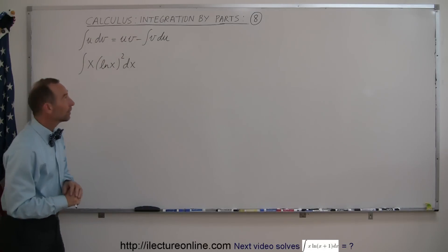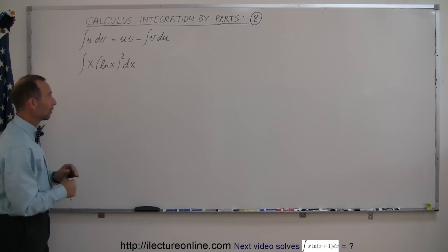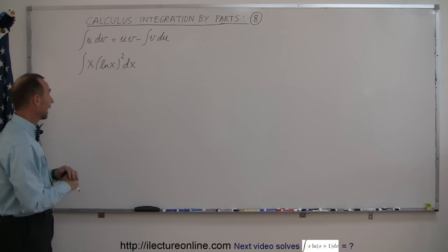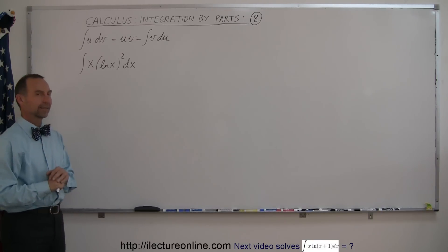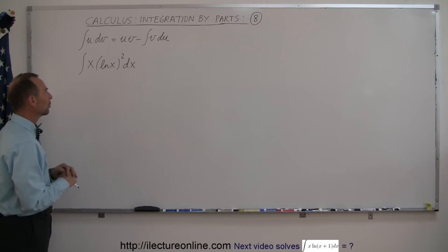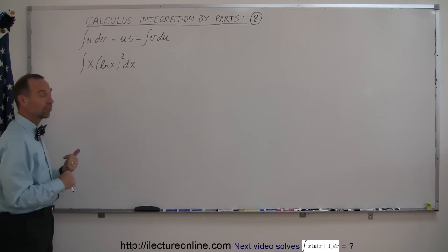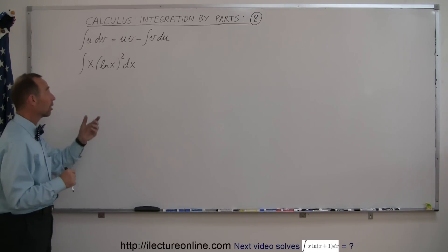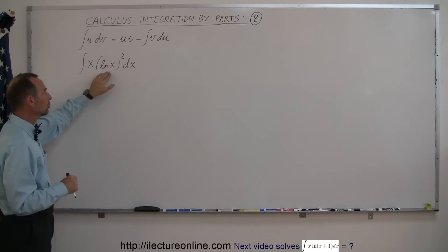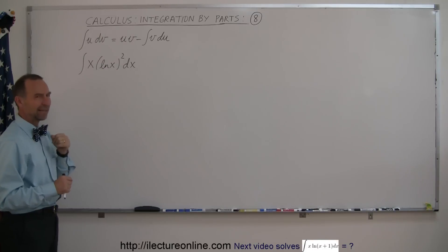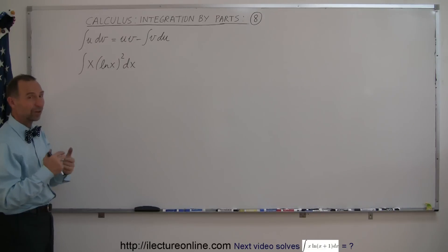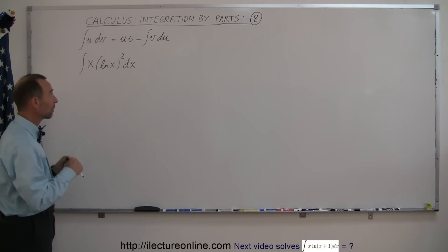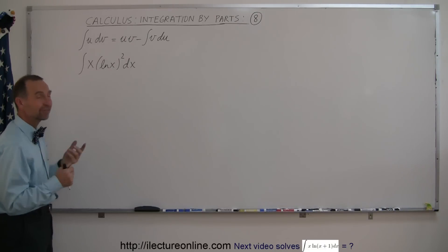Here's example number 8 on how to use integration by parts to integrate x times the natural log of x squared dx. Since we don't know how to integrate the natural log of x, it's not a good idea to call this portion dv — you'd have to integrate it — so we're going to call this portion u. But since this is squared, I have the suspicion that we may have to do this twice, so this is one of those techniques where you have to use integration by parts twice.